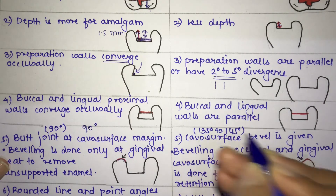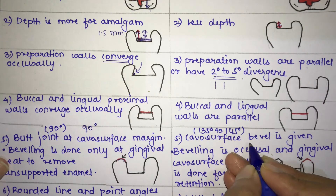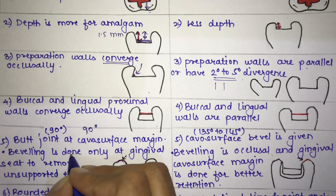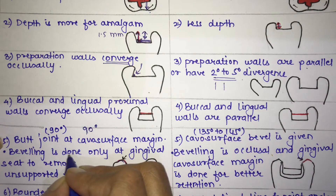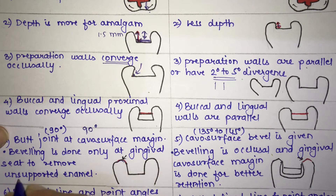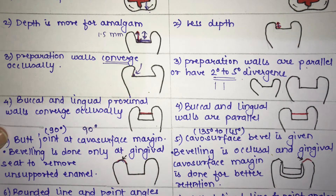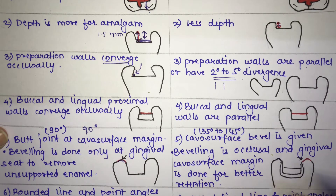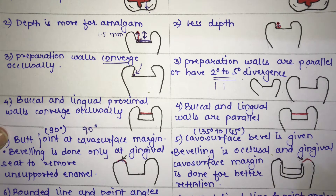In cast restoration, the cavity surface margin is 135 to 145 degrees. Occlusally, a bevel is given in cast restoration. In amalgam, beveling is done only at the gingival seat to remove unsupported enamel in cases of Class 2, whereas in cast restoration, beveling is done on both the occlusal and gingival surfaces for better retention.